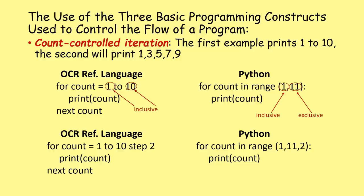Stepping allows us to go 1, 3, 5, 7, 9 by using steps of 2. In OCR reference language: 'for count = 1 to 10 step 2'. In Python: 'for count in range(1, 11, 2)' - the first number is the start (inclusive), the second is the end (exclusive), and the third is the step size.